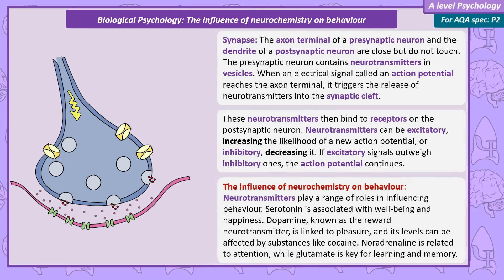There are a wide range of neurotransmitters and they have different functions. Serotonin is linked to feelings of wellbeing and happiness. Dopamine is a reward neurotransmitter and is responsible for intense pleasure. Many illegal drugs, like cocaine, influence the level of dopamine. Noradrenaline is associated with attention, and glutamate is associated with learning and memory.